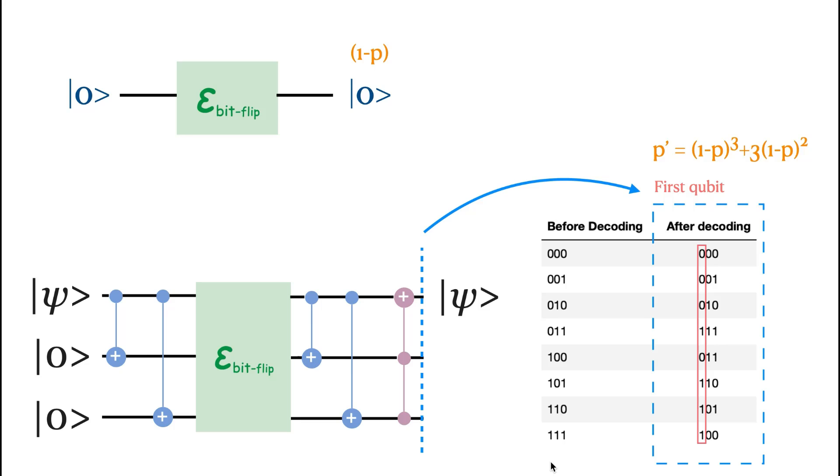On this slide, it shows both the probability at the output between the two cases with and without the bitflip error correction.